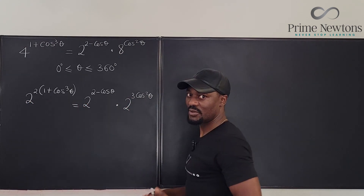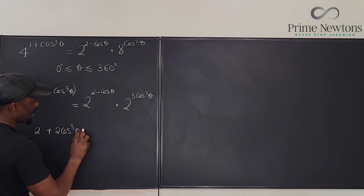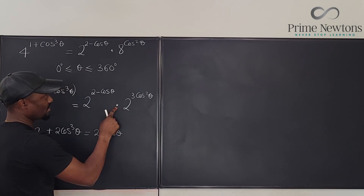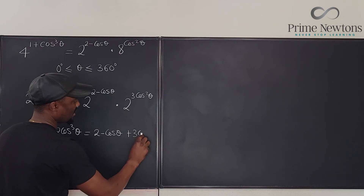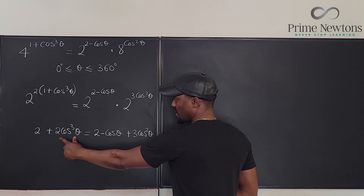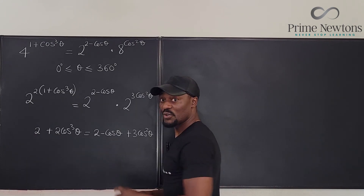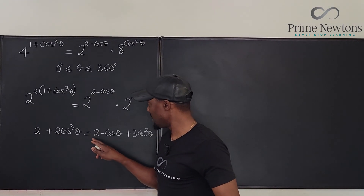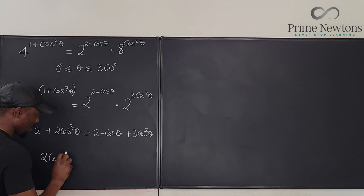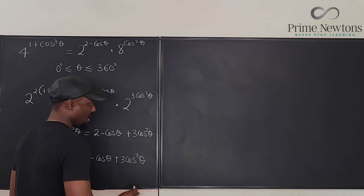Because all the bases are the same, I can equate the exponents. On the left I get 2 plus 2 cosine cubed theta, and on the right, because of multiplication I add the exponents: 2 minus cosine theta plus 3 cosine squared theta. I can see a 2 on both sides, so I subtract 2 from both sides and those cancel, leaving 2 cosine cubed theta on the left.